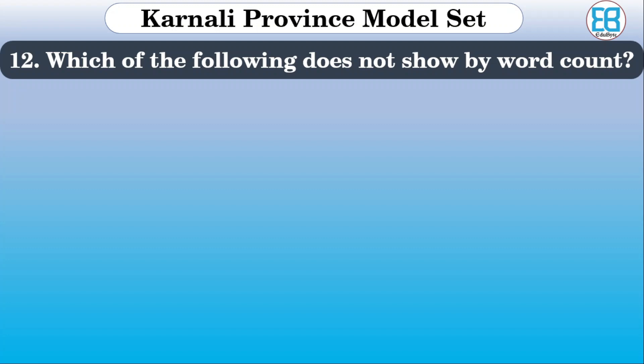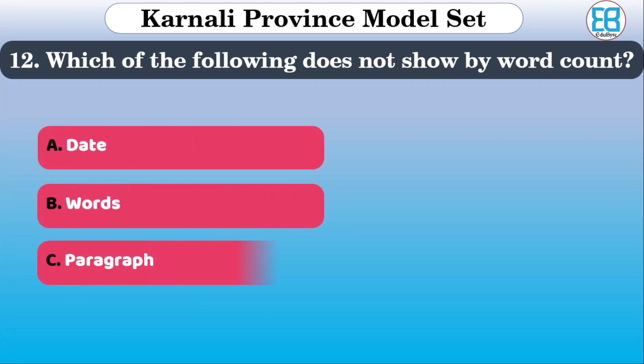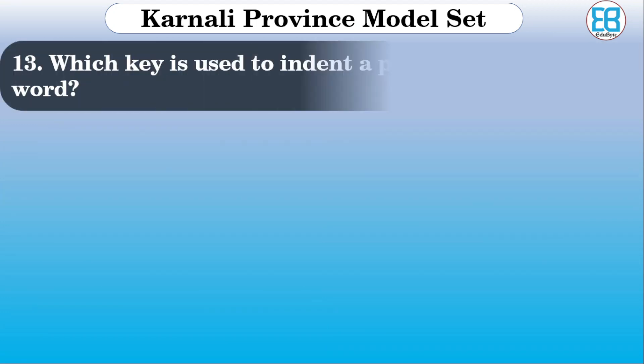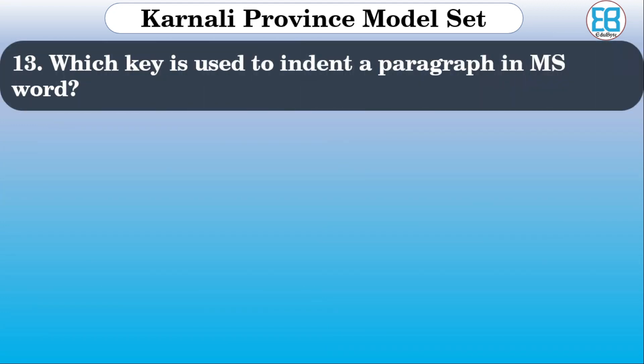Which of the following does not show by word count in MS Word? The options are: letter, date, words, paragraph. The correct option is date.